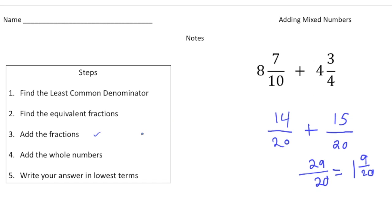Alright now I'm going to add number four, I'm going to add the whole numbers. So eight and four gives us twelve. I need to now add twelve plus one and nine twentieths, which will give us a sum of thirteen and nine twentieths. And there's your answer. Nine twentieths is in lowest terms, so we're all done.